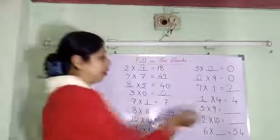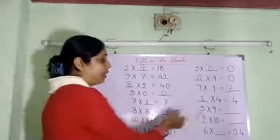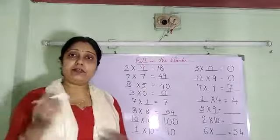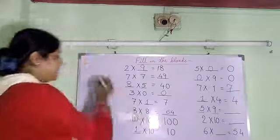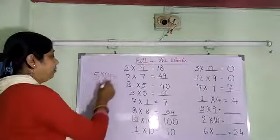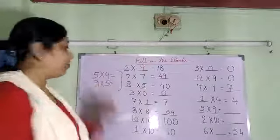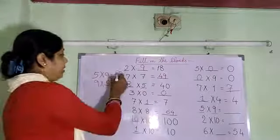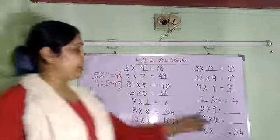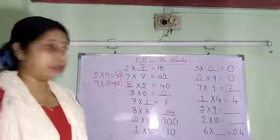5 into 9 or 9 into 5 — whichever you feel easy, you read the table of that. Either you read the table of 5 or the table of 9, the answer, the product will be the same. 5 into 9 and 9 into 5 are the same. You read the table of 5: 5 9s are 45. And we know 9 5s are also 45. So we know 5 9s are 45.